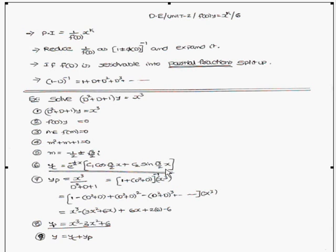The particular integral is equal to x³ / (D² + D + 1). In this type of problem, when the right-hand side is x³, you always convert the denominator into the form (1 ± something)^(-1). That gives us (1 + D² + D)^(-1) into x³.